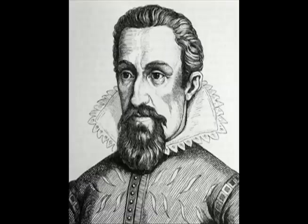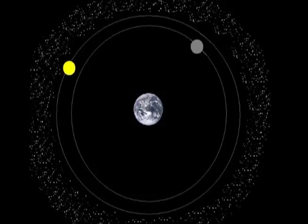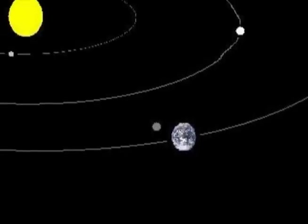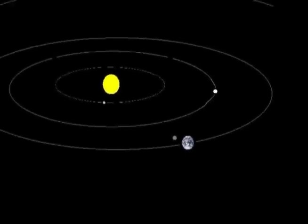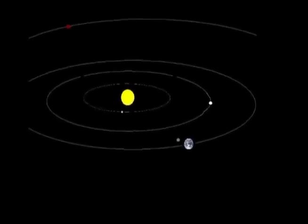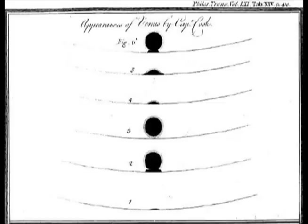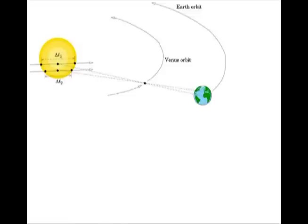His law of planetary motion turned this into this. In the 18th century, a transit of Venus across the sun, timed at opposite ends of the earth, made it possible to calculate the exact distance of the sun, and by extension the distances of all the known planets. But that still left the stars.